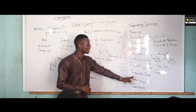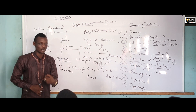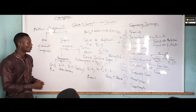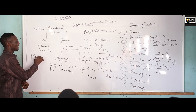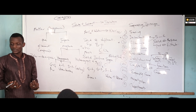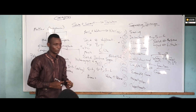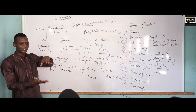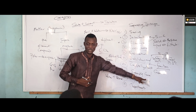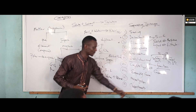The next one is the separating funnel. When we are having two liquids which cannot interact together — that means immiscible liquids — for example, a polar liquid and a non-polar liquid, such as kerosene and water. Water is polar, kerosene is non-polar. When mixed together they form two distinct layers, and we can simply use a separating funnel to separate them.